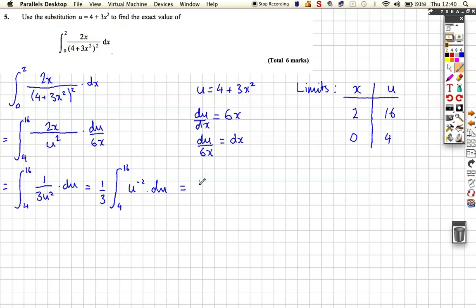So that means that this integration is really this. So, it's 1 third of, increase the power by 1, divide by the new power, so it's going to be minus u to the minus 1, limits run from 4 to 16, and if I really wanted to write that out differently, inside my square brackets, I'm going to have minus 1 over u running from 4 to 16.